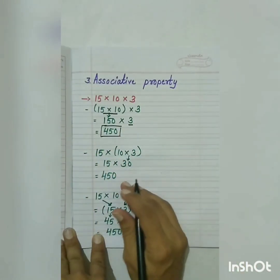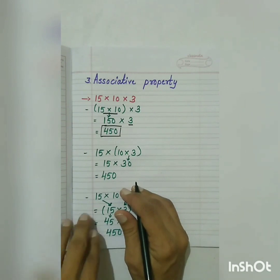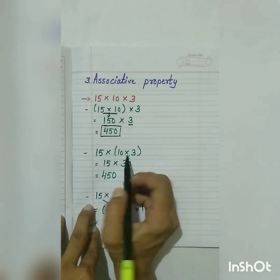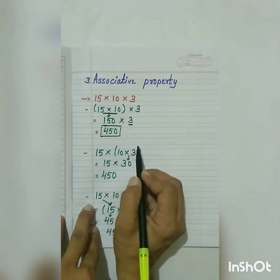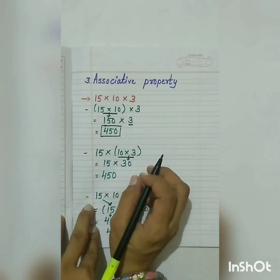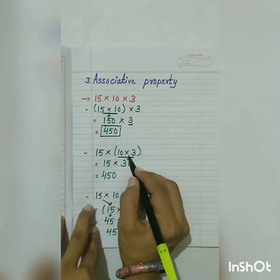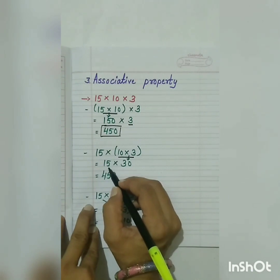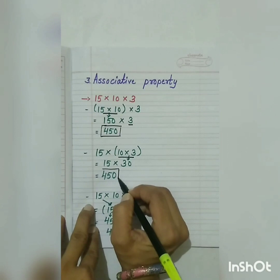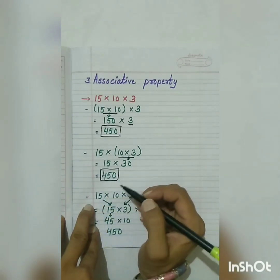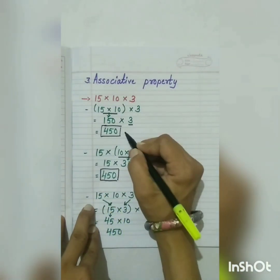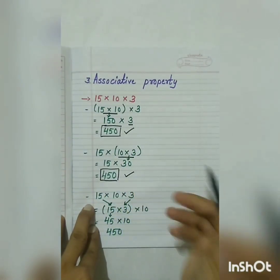Now we just change the order. We keep 15 at the first place, and place 10 and 3 in the bracket. Then 15 multiplied by 30 gives us the product 450. So you have seen that just by changing the order, our product is still the same: 450.